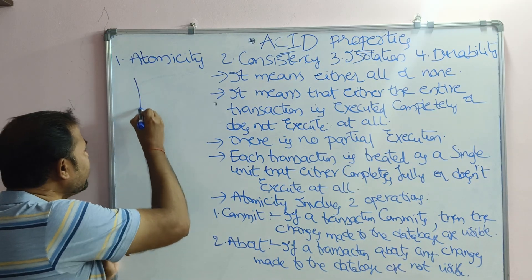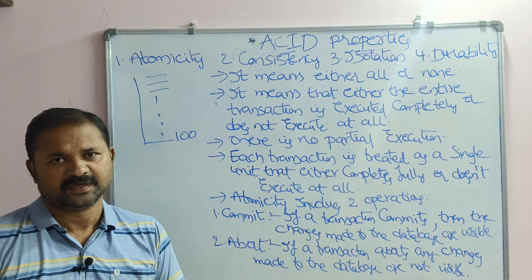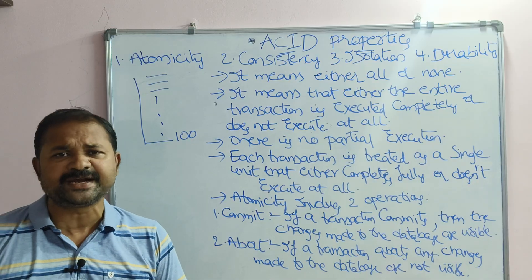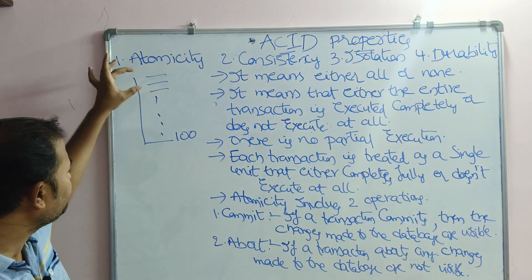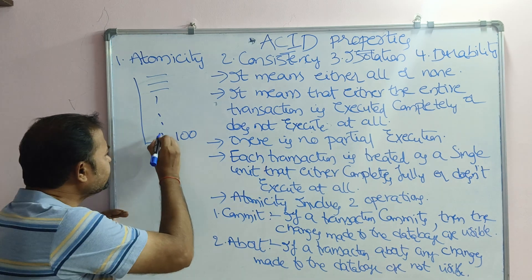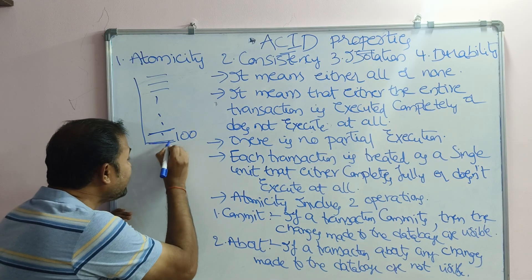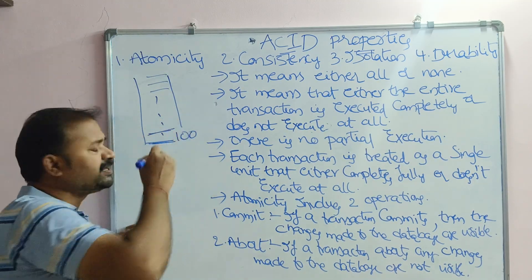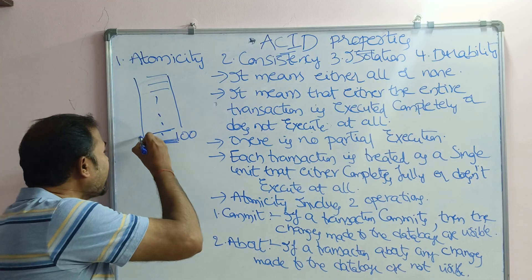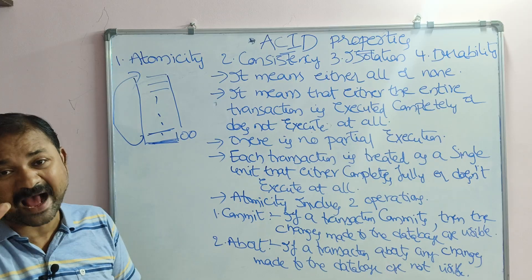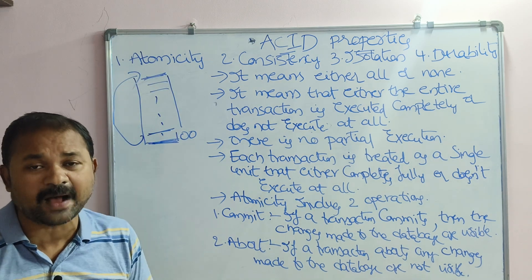Let us take an example. Suppose we have a transaction which contains 100 instructions. If all 100 instructions are executed successfully, that is a complete transaction. But if the first 99 instructions are executed and there is a problem at the 100th instruction, then we have to roll back to the starting instruction and abort that transaction.